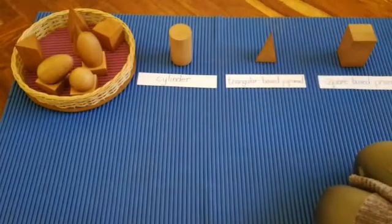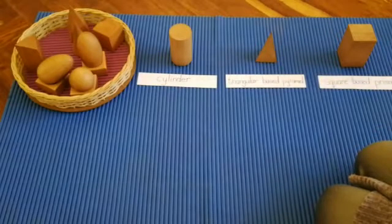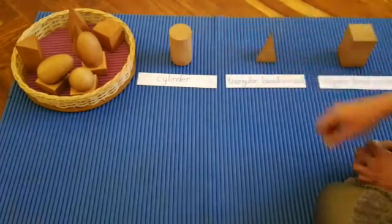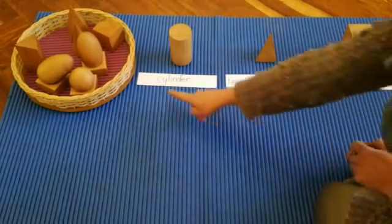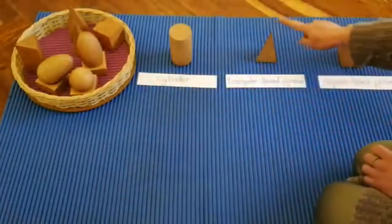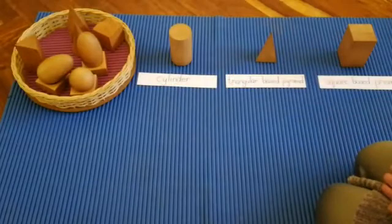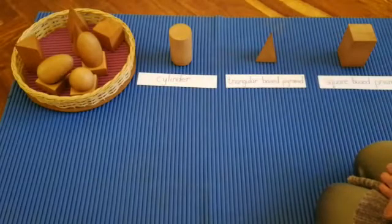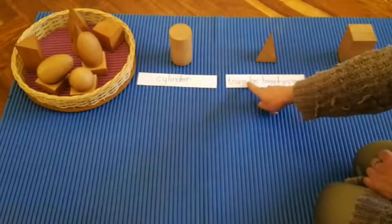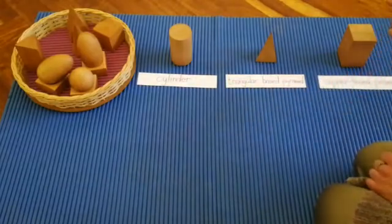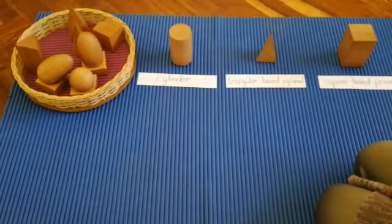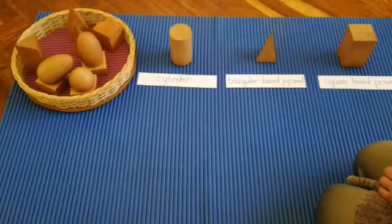So today we learned that this geometric solid is called a cylinder. This geometric solid is called a triangular based pyramid. And this geometric solid is called a square based prism.